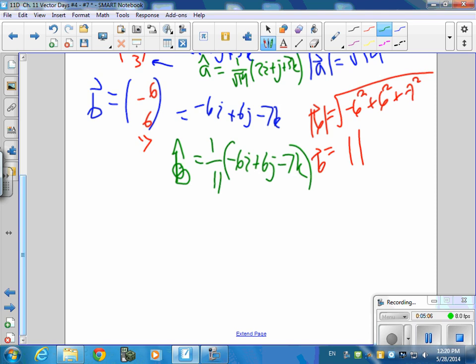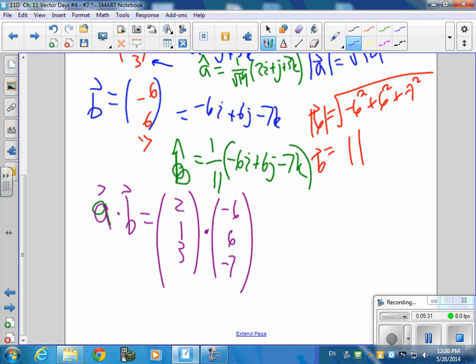So, then another thing that we did is we talked about the dot product, A dot B. So, if we go A dot B, we take those, which was 2, 1, 3 dot product negative 6, 6, negative 7. And, to take that dot product, all you're going to do is multiply across. 2 times negative 6 is negative 12. 1 times 6 is 6. 3 times negative 7 is negative 21. So, I get negative 33, negative 27. Sound good?